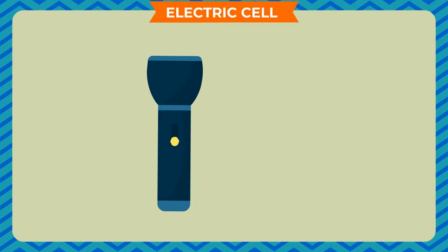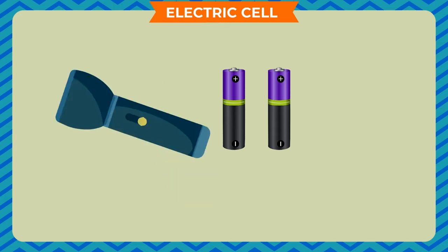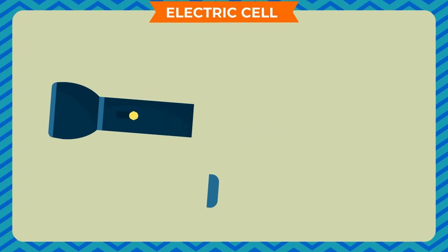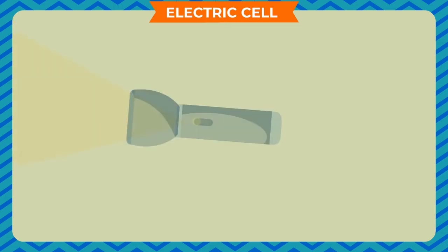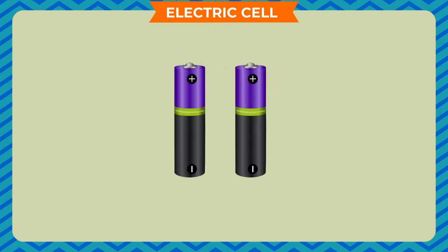Aim: To find out the source of electricity in an electric torch. Materials required: An electric torch, two electric cells. Method: Take the torch and open its back end. Insert two electric cells inside it in such a way that the metal cap of the cell is placed inside. Now close the end by screwing it. You see that the bulb lights up on switching on the torch. Now remove the cells and again switch on the torch. The bulb does not light up in this case. Conclusion: This shows that the source of electricity in the electric torch is the electric cell.